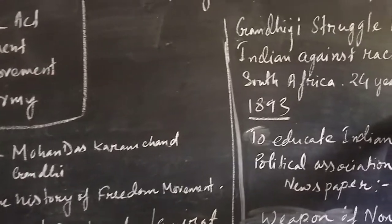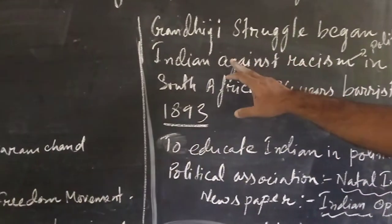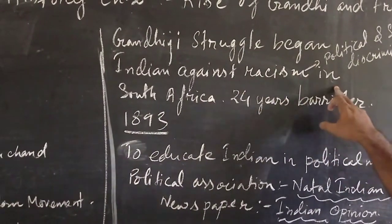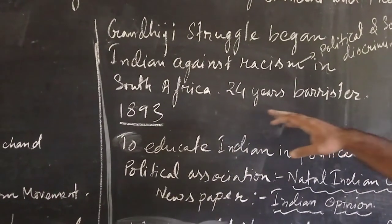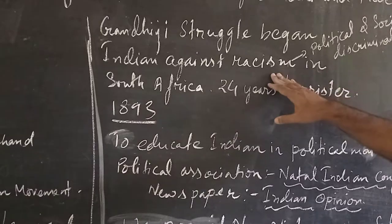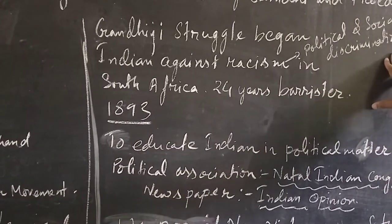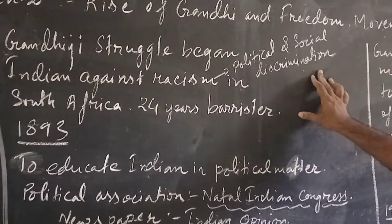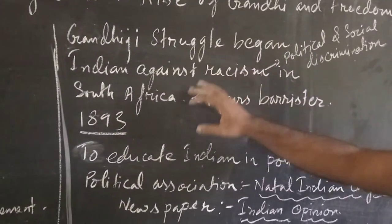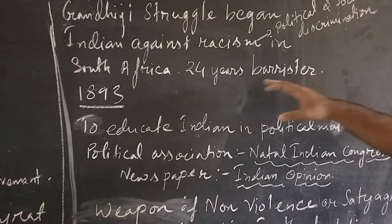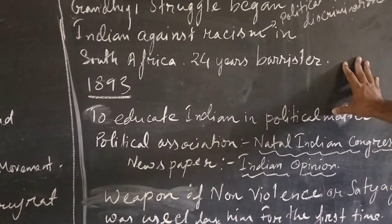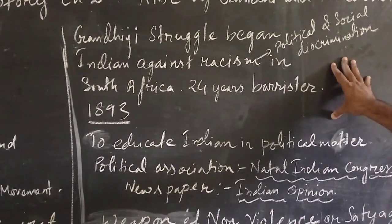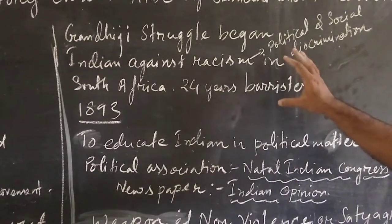Gandhi's struggle began against racism in South Africa. When Gandhi went to study law in South Africa, he saw that people of South Africa were discriminating against Indians — both politically and socially. From that time onward his struggle began, in 1893, when he was only 24 years old. Mahatma Gandhi's struggle began against racism and political and social discrimination in South Africa against the people of India.